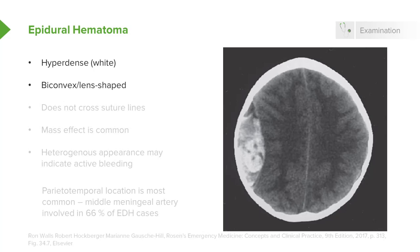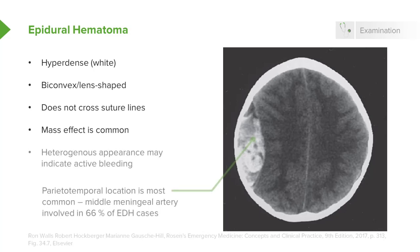If it's bowed out on both sides, that suggests that it's an epidural. It doesn't cross the suture lines. It's very commonly associated with mass effect, and on this particular CT, you can actually see the midline is bowing over to the contralateral side.